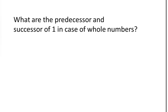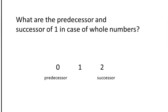Now, what are the predecessor and successor of 1 in the case of whole numbers? 1 plus 1 equals 2, so 2 is the successor of 1. What about the predecessor of 1? 1 minus 1 equals 0, so 0 is the predecessor of 1 in whole numbers, because whole numbers start with 0. So in natural numbers there is no predecessor of 1, but in whole numbers the predecessor of 1 is 0.